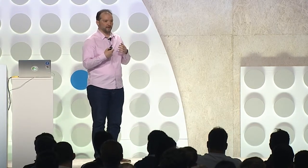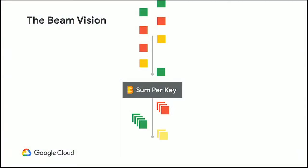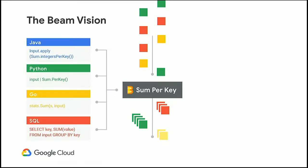Let me talk about the vision behind Beam using an example of a typical transformation: summation of values based on keys. The vision of Beam is to offer a variety of such operations across different languages. Languages supported today include Java, Python, experimental Go SDK. A lot of folks working on Beam come from Google, but we have a large community of non-Googlers contributing to Beam — at this point the majority of people working on Beam are non-Googlers.